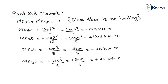For finding the deflections or rotations at each joint and completely analyzing this beam, we need to find the fixed end moments first. For spans AB and BA, the fixed end moments will be equal to 0 because there is no loading acting on span AB.